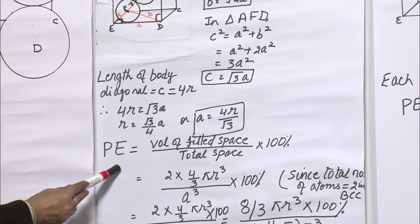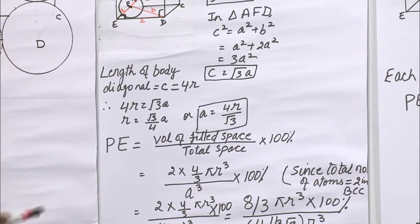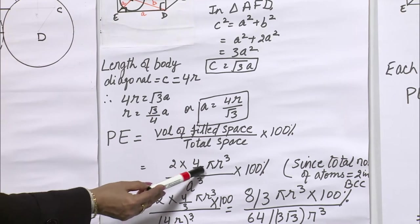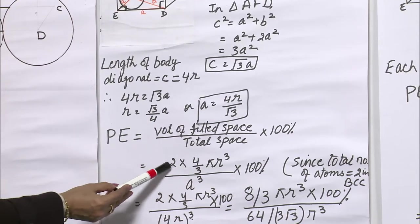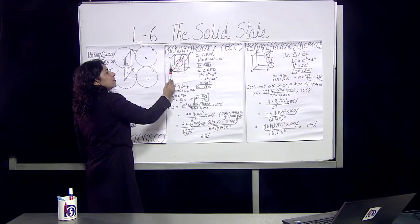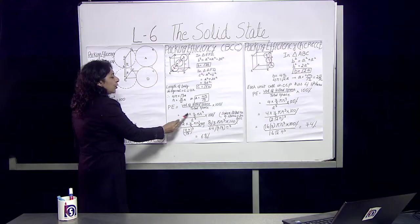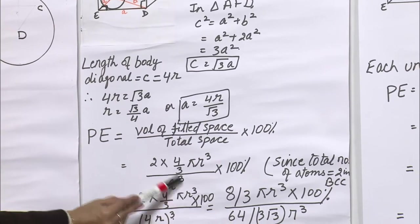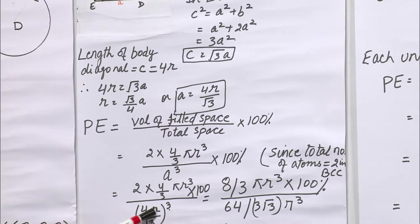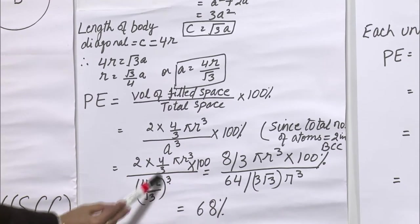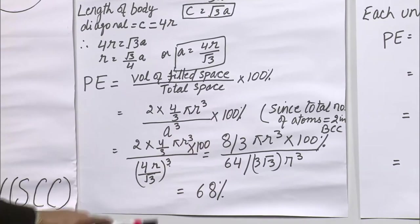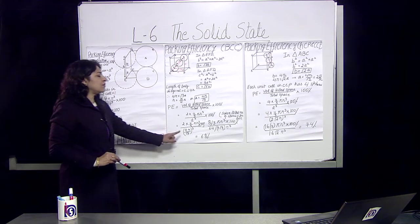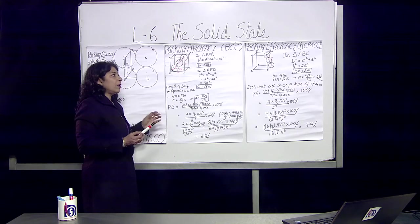Packing efficiency is the volume of the filled space divided by total space. The filled space is 2 × (4/3)πR³ since there are two atoms in BCC. The total volume is A³ = (4R/√3)³. Solving this equation we get 68%. Comparing: simple cubic was 52.4%, BCC is 68%, meaning BCC is more efficient in packing.